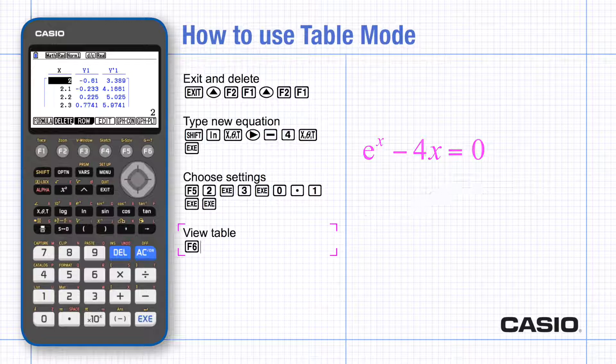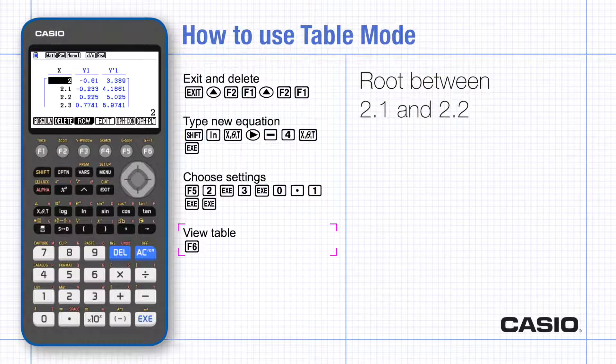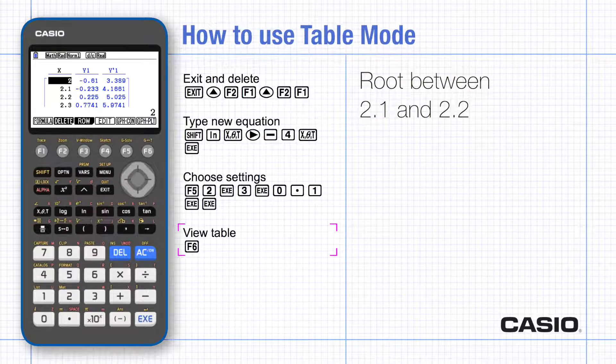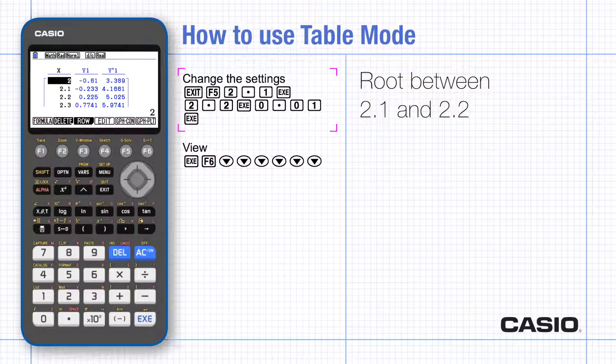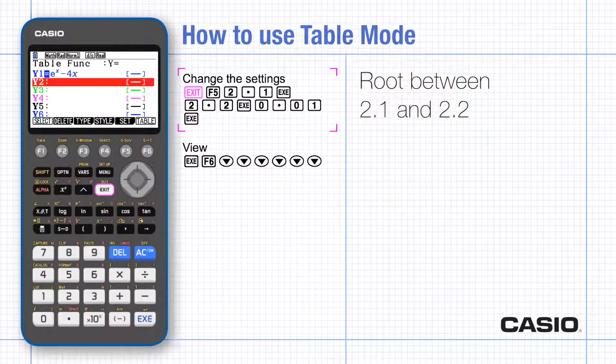When you view the table you can see there's a change of sign in y as x goes from 2.1 to 2.2, which is evidence that there is a root of the equation between these values. To find the root more accurately, zoom in by changing the settings.